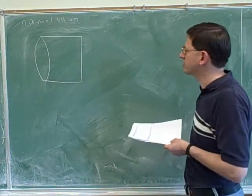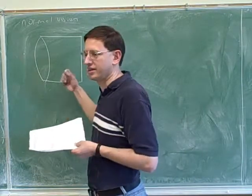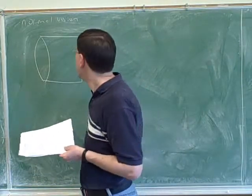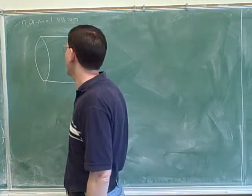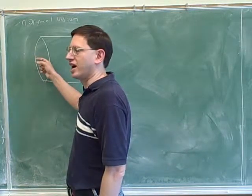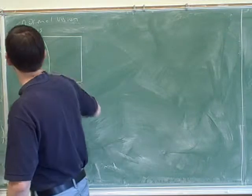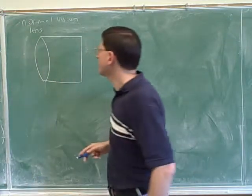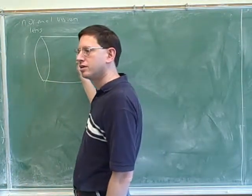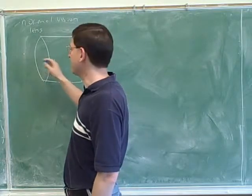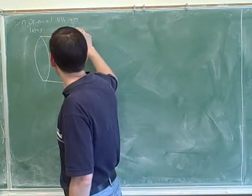Let's first talk about how normal vision works. This is good to spend some time on because you're pretty sure to see a question about the eye on the test. What are the different parts of the eye? The lens is one part. Do you remember what we call the back of the eye? The pupil is in the front of the eye — that's what lets the light in.